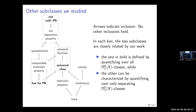Here is a picture of various results we proved, including several new classes defined in our paper alongside classes already studied by others. Arrows indicate inclusion, and we show no other inclusions hold among these classes. There is an organizing principle: for each of the three boxes in the diagram, the class in bold is defined by quantifying over all pi-0-1-X classes, while the other class in the box can be characterized by quantifying over only the separating classes.